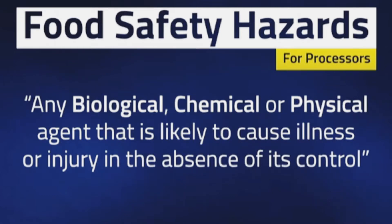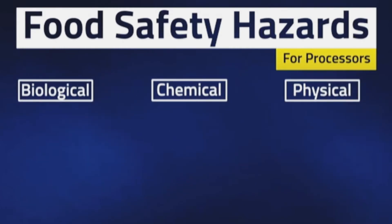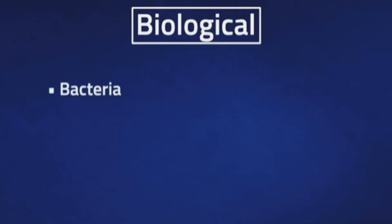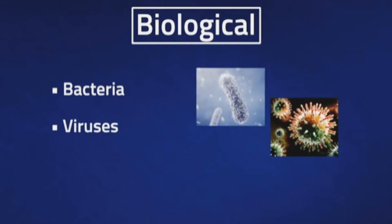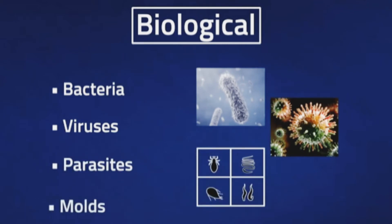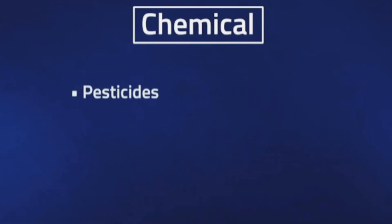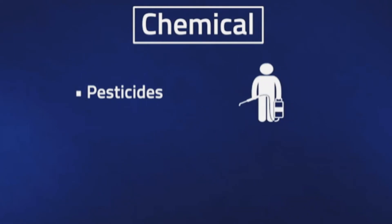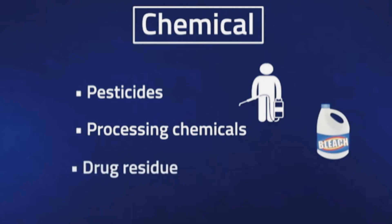We have three major types of hazards: biological, chemical, and physical. In biological hazards we have bacteria, viruses, parasites, and molds. In chemical hazards we have pesticides, processing chemicals, drug residue, and allergens.